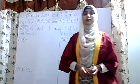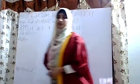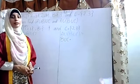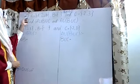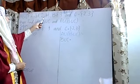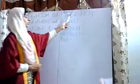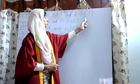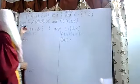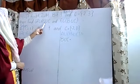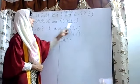Assalamu alaikum students. Now exercise 1.2 question number 6. In question number 6, we have: if set A equals {1, 2, 3}, B is the null set (empty set), and C is the set {2, 3}. Then find A union B union C, and A union (B union C).